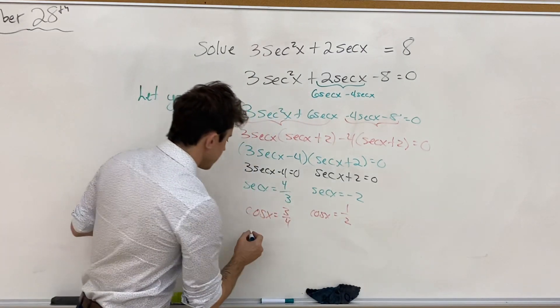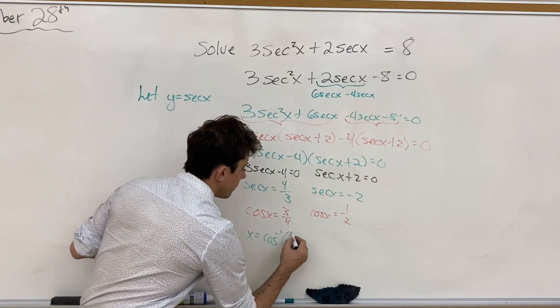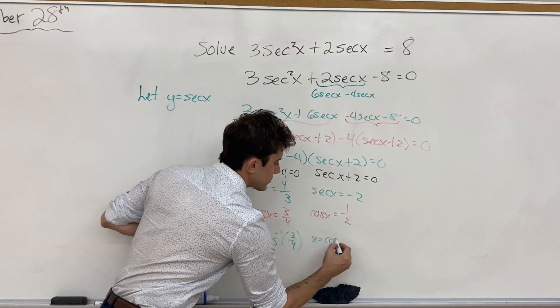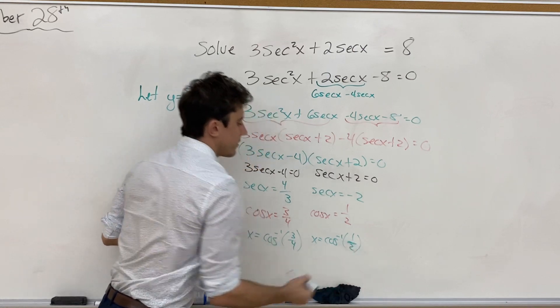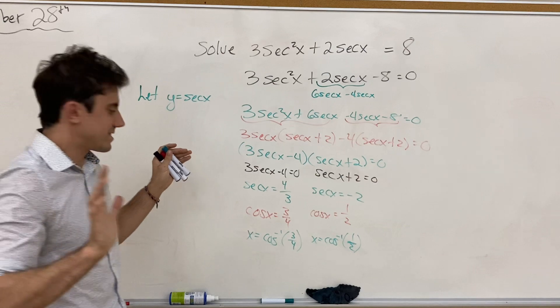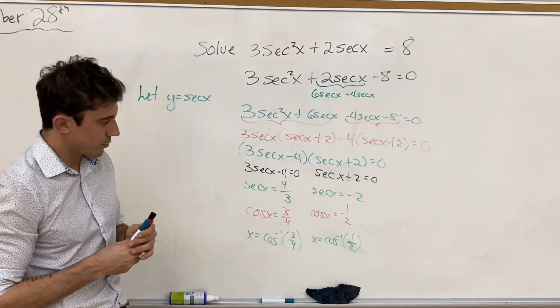Providing solutions, x being the inverse cos of 3 quarters, and x being the inverse cos of negative 1 half. And then you guys can get those solutions. I don't have a calculator handy, so I'm going to leave those as is, just because I don't want to get these non-exact values for the inverse cos of 3 quarters.